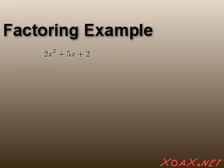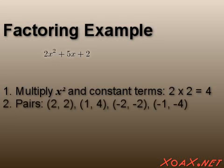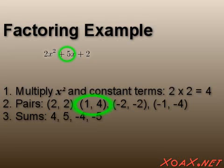We have 2x squared plus 5x plus 2. First we multiply the x squared coefficient and constant term, that is 2 times 2, which gives us 4. The pairs of numbers whose product is 4 are 2 and 2, 1 and 4, negative 2 and negative 2, and negative 1 and negative 4. These sum to 4, 5, negative 4, and negative 5 respectively. So we take 1 plus 4 as the sum for the linear term.